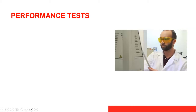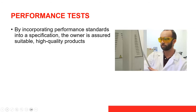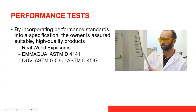By incorporating performance standards into a specification, owners ensure they get a suitable high-quality product or system for the project. Real-world exposure methods, AMAQUA, and QUV are all types of weathering testing that can be done. A coating manufacturer would take accelerated testing and compare it to real-world exposure — because real-world exposure takes much longer. As a manufacturer, we're able to understand how our coatings will perform in a quicker amount of time.